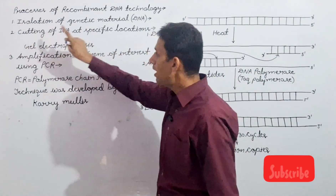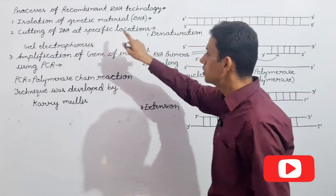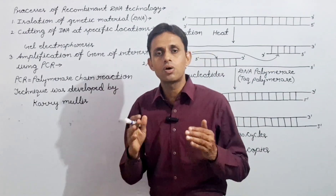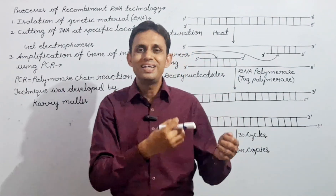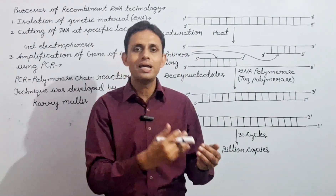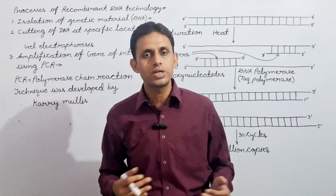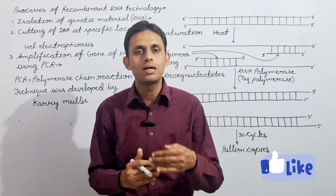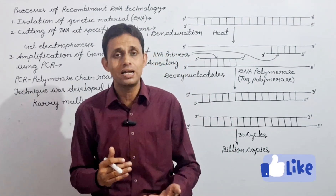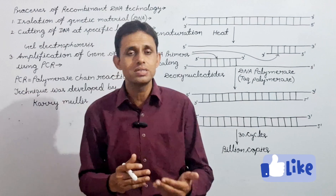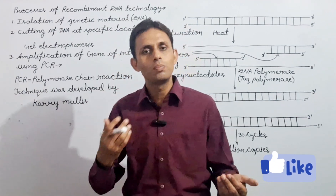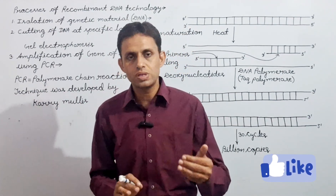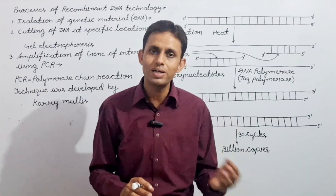The first step is the isolation of genetic material. To make recombinant DNA, we first need to isolate the DNA. Whatever cell it is — bacterial cell, plant cell, or animal cell — we will remove the DNA. According to the cell type, we will use the appropriate enzyme to extract the DNA.